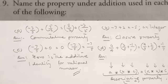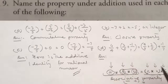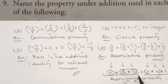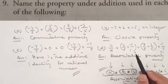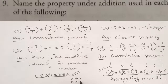It is important to note that subtraction and division are not used in closure, associative, or commutative properties — we only use addition and multiplication in these properties. The bracket arrangement remains the same in the associative property.